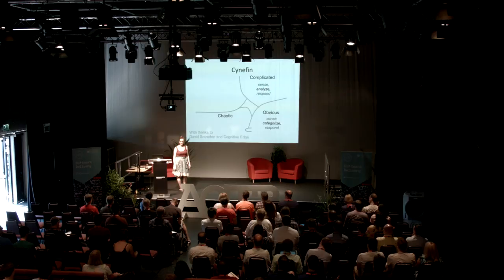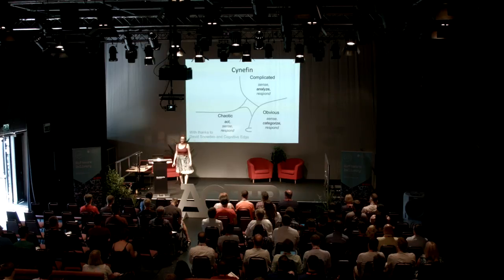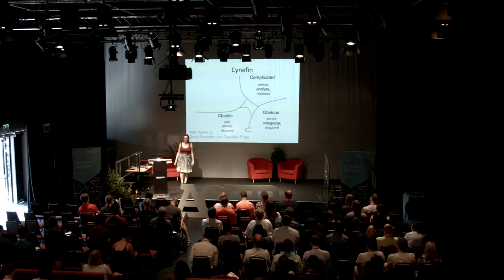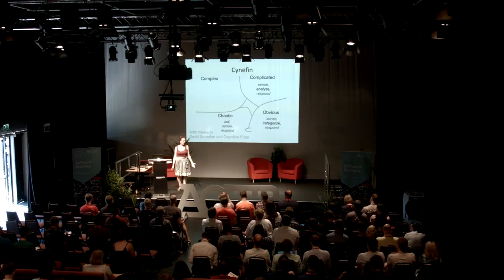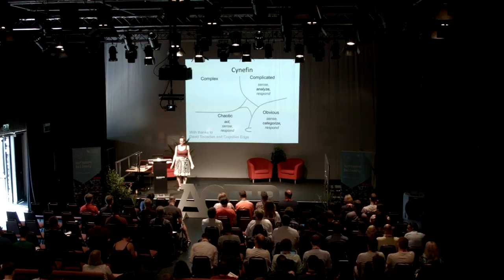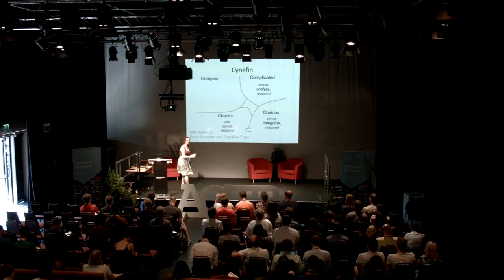Urgent production bugs that are going to destroy your business — that's chaos. In chaos we have to act and act really quickly. That means we have trouble dealing with places where it would actually be safe to try something out. We're not in that much urgency, but the outcome is still unpredictable. In the complex domain, cause and effect are correlated in hindsight — you can see how you got there but you couldn't possibly have predicted it.